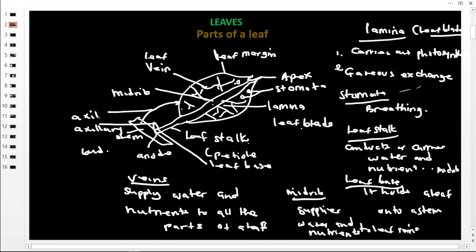The veins carry food from the parts of the leaf where it has been made to the midrib. The midrib then conducts it to the stem, and the stem takes it to any part of the plant where it is going to be stored.